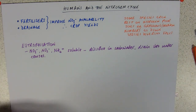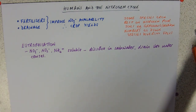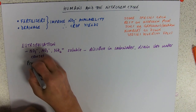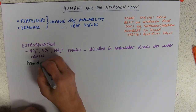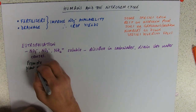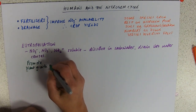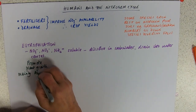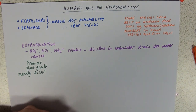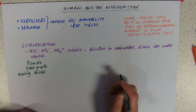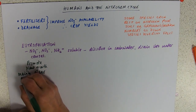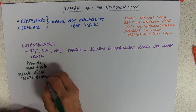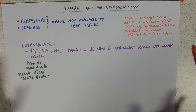What happens when nitrates, nitrites, and ammonium get into watercourses is that they promote plant growth. That might not sound too bad, but mainly we're talking about algae — small unicellular, technically protoctists — and they form what's called an algal bloom, turning the water green and soupy.